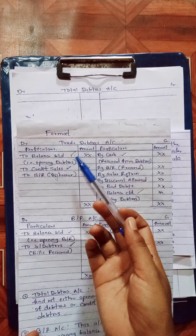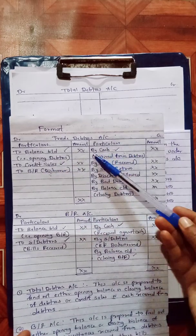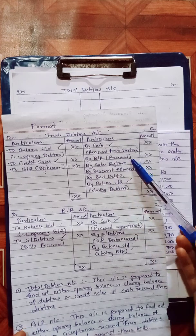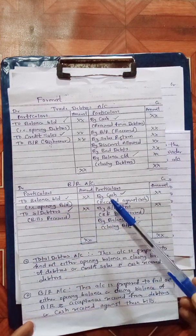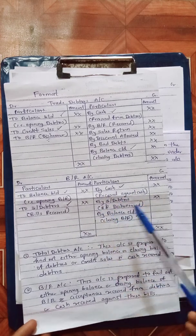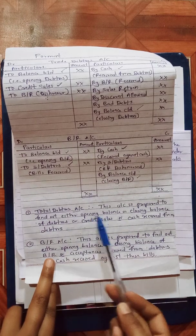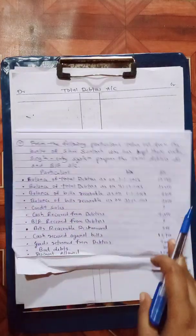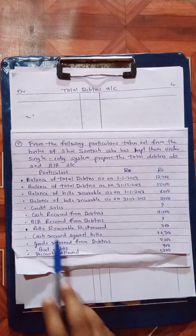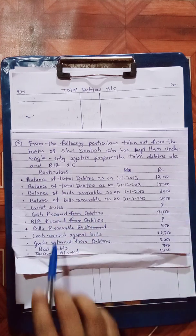Now we apply the format: total debtors account and bills receivable account. On the debit side we record opening balance and credit sales. On the credit side we record: cash received from debtors, bills receivable received from debtors, sales return, discount allowed, bad debts, and closing debtors. Credit sales is the missing item we need to find out by balancing.